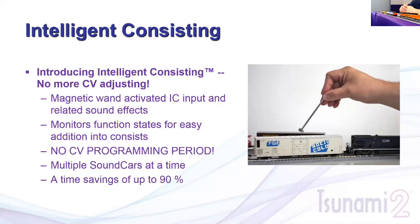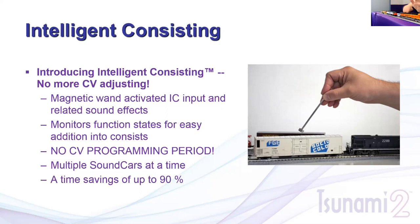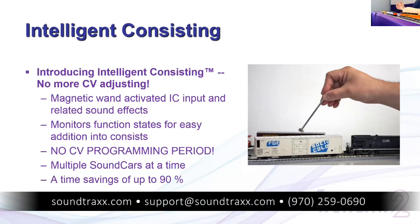The last type of consisting is intelligent consisting, used for our sound cars. You wave a magnet over the decoder to trigger search mode, then press a function button four times — the DCC system sends that command, the sound car decoder sees it and joins the locomotive or consist address. There's no CV programming during the consisting process, though you'll want to set CVs 21 and 22 for features like F11 brake. You can do multiple cars at a time by waving the magnet, hitting F8 four times per car, within a one-minute window. We'll have a future webinar covering sound car in detail.